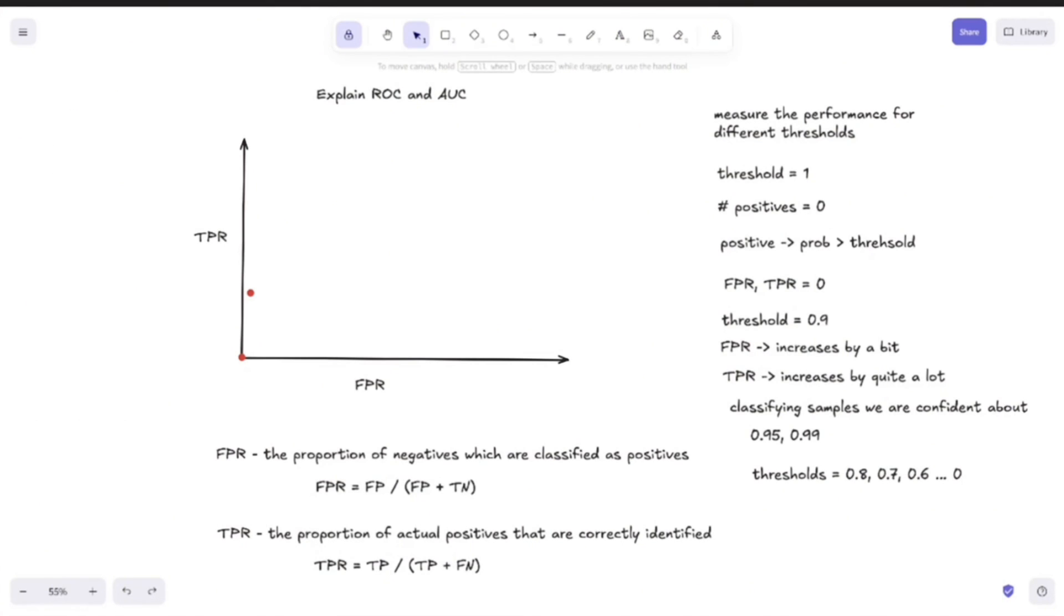And what we observe if we do that is that the rate of gains in true positive rate starts to decrease, while the rate of gains in false positive rate starts to increase. So our graph will start to look something like this. So let's say that we have this value here. So again, a smaller gain in TPR but a bigger one on FPR and so on. And it will start to resemble a logarithmic curve.